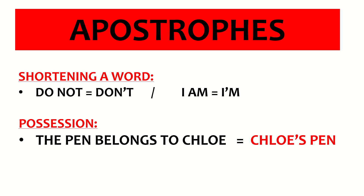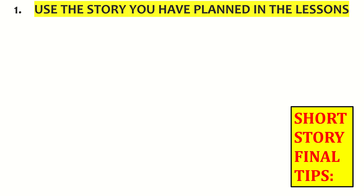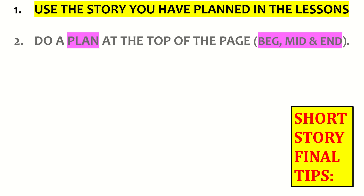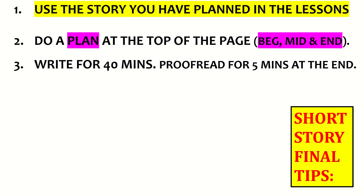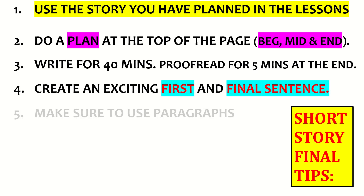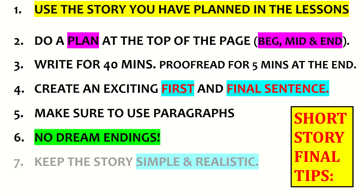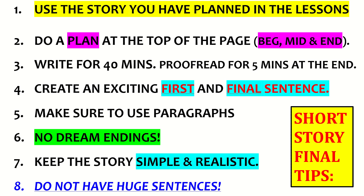Remember your apostrophes — 'do not' becomes 'don't,' 'I am' becomes 'I'm,' and for belonging 'the pen belongs to Chloe' becomes 'Chloe's pen.' Short story final tips: use the story you planned beforehand, don't panic and do a new one on the day. Do your plan at the top of the page. Write for 40 minutes and proofread for five minutes. Create an exciting first and final sentence. Use paragraphs, no dream endings, keep the story simple. If any sentences run two or three lines without a full stop, go back and add one with a capital letter. Good luck in the exam!